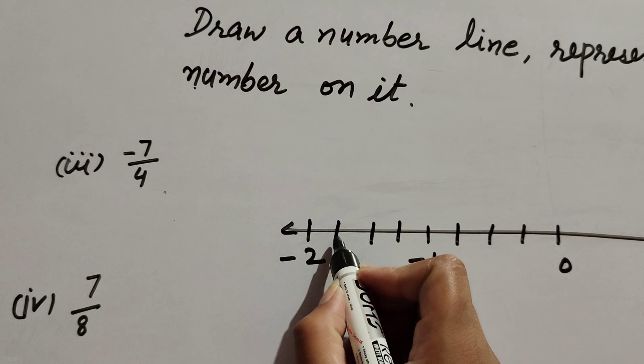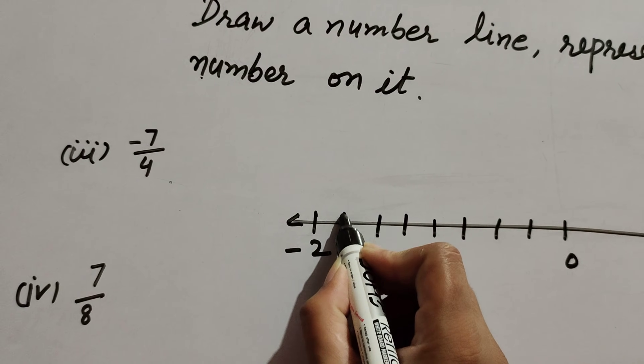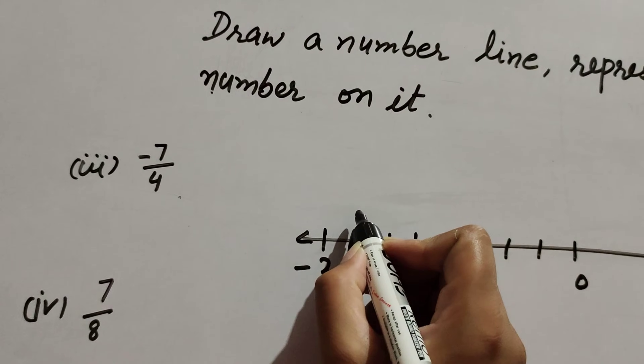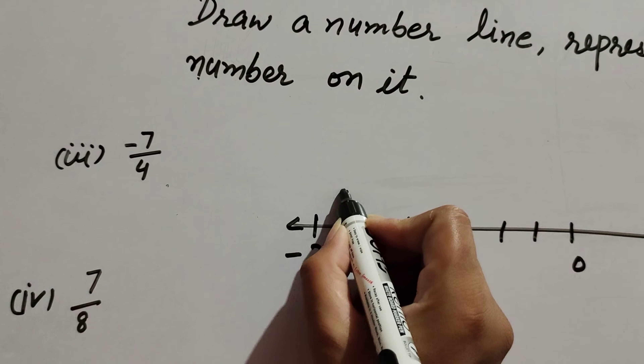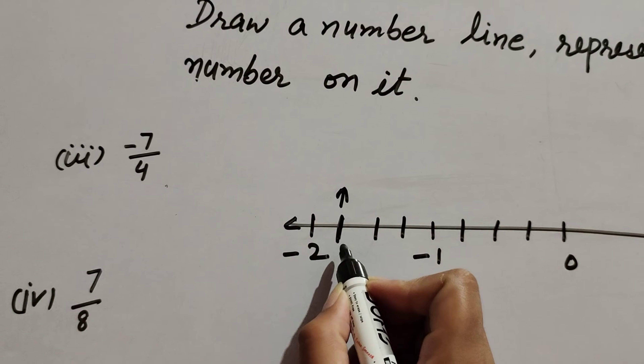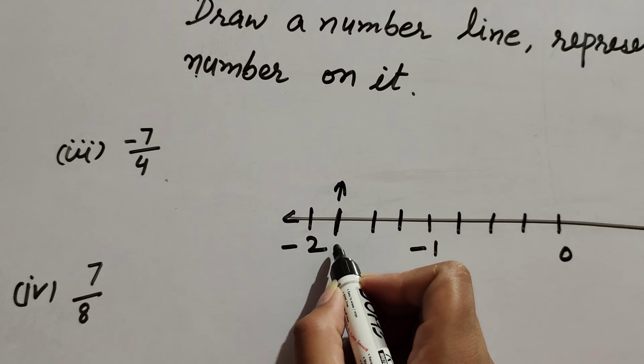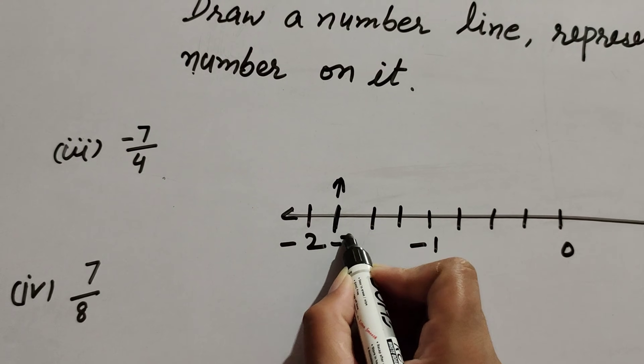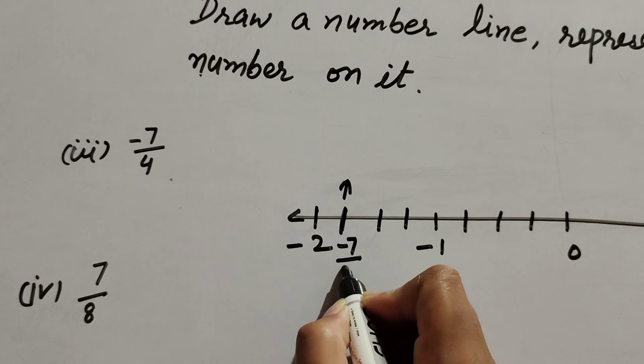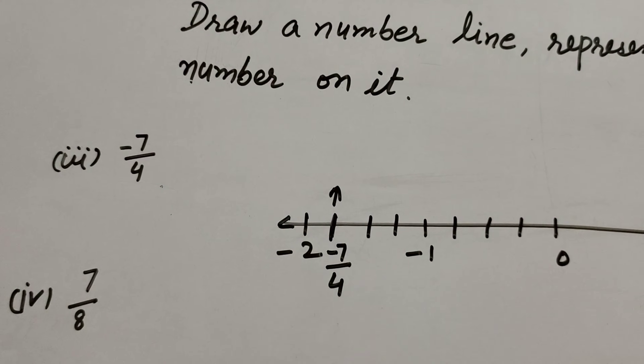Now we represent this number — we count the lines and this line represents minus seven over four.